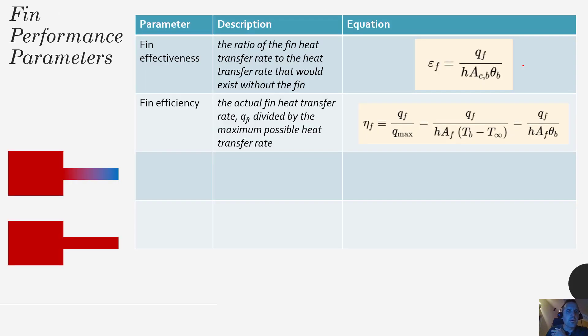So our next performance parameter is called the fin efficiency. The fin efficiency is the actual fin heat transfer rate, Q F, divided by the maximum possible heat transfer rate that the fin could have. So again we see Q F as calculated from the table for the fin, divided by Q max.